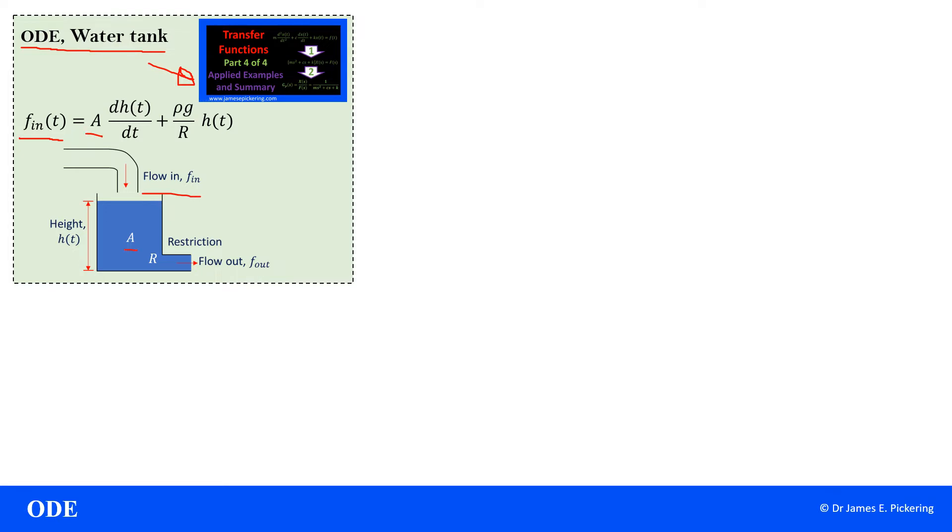A is the area of the tank. dH(t)/dt is effectively the rate of change of the height of the tank, so H(t) is the height, change of the height. ρ here is the density of the fluid in the tank. g is the gravitational constant.